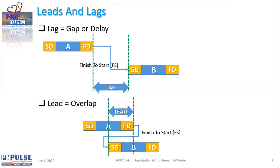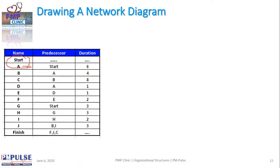Apparently people do get confused between Lag and Float, so I just want to clarify right now. A's predecessor — predecessor means what is before this activity — is Start, which means A is the very first thing that you do. So you'll have a Start node and immediately after that you have the A node.